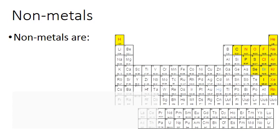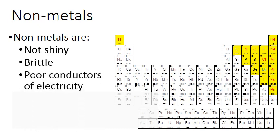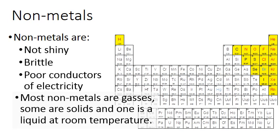The nonmetals, it's a fairly small group compared to the metals. And the nonmetals are not shiny. They are brittle, so they very easily break. They are very poor conductors of electricity. Most nonmetals are gases, some are solids, and one is a liquid at room temperature. So they're kind of all over the place. They're not mostly all solid like the metals are.